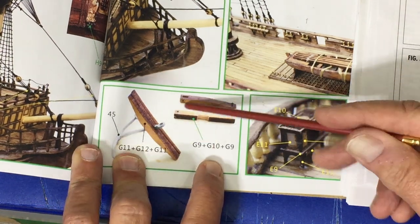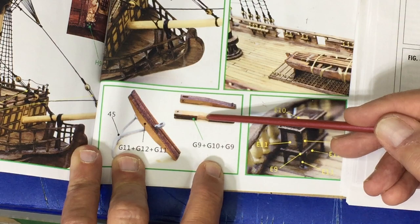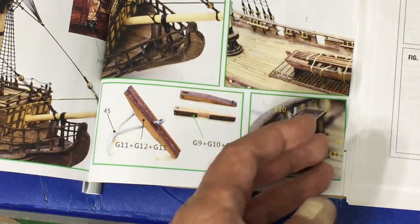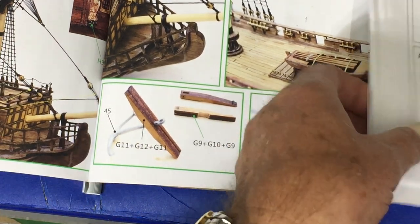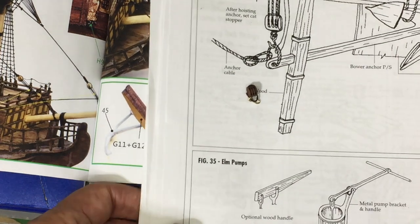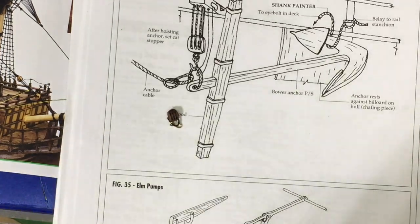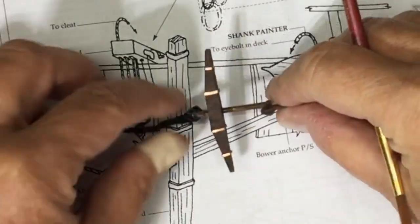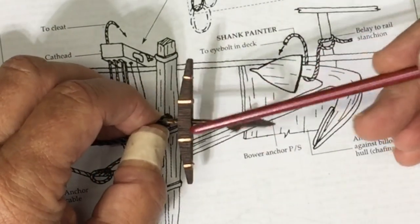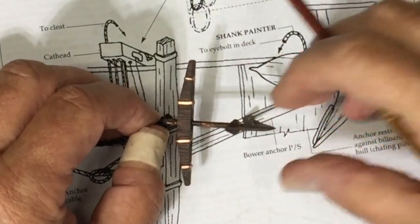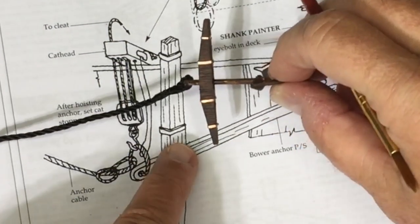What this actually is, from what I can determine, is called a cat head. There's really some work you'll need to do to it. Here is an example of what you could do and what I'm trying to achieve, or at least come close to. Here is my anchor. I've added these straps on here. The instruction book didn't show anything like that, but I like the look of that.